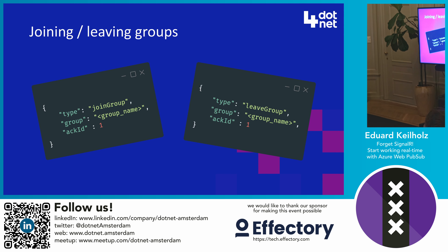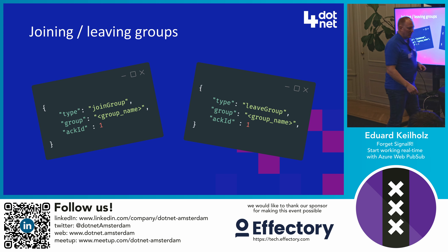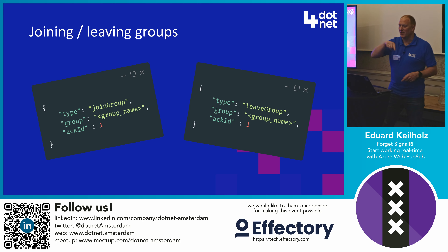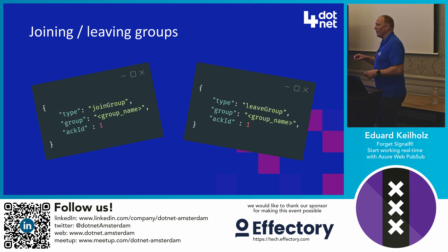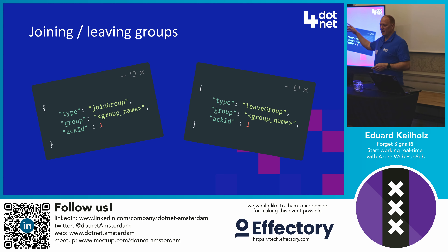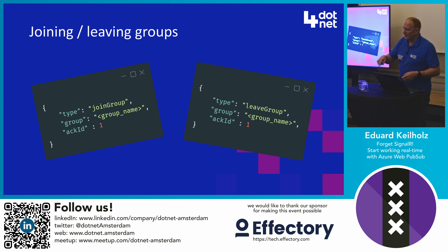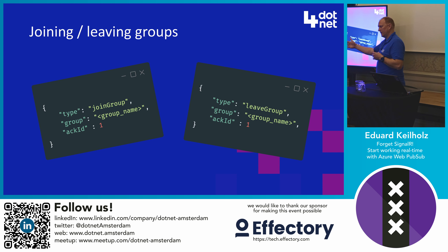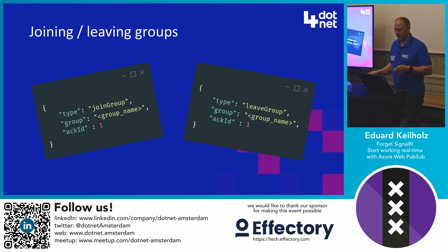There was a question about whether there is any security behind joining and leaving groups, or if it's just based on the URL. Good question. Is there a security issue when you can just join and leave groups? The answer is yes — and the answer lies in the JSON Web Token I mentioned earlier. Let's dig into the Azure portal to show how this works.